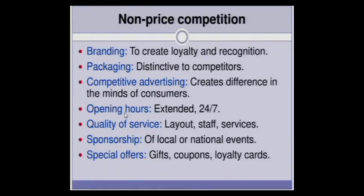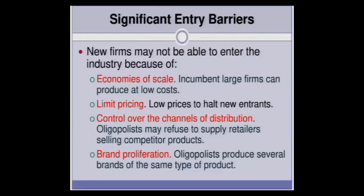Firms in an industry providing similar products may differentiate through different opening hours. In certain towns you have a large Tesco and large Asda — one of them stays open 24 hours. Even if they are not selling much at midnight or 3 a.m., they still leave it open just to differentiate. Sponsorships are another form: you may see the Adidas logo on football players' kits. Adidas, Reebok, and other dominant sportswear companies are mostly oligopolists. Non-price competition is not an exhaustive list — it can take many forms.